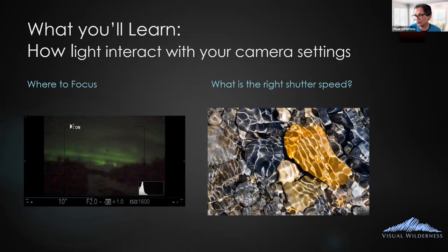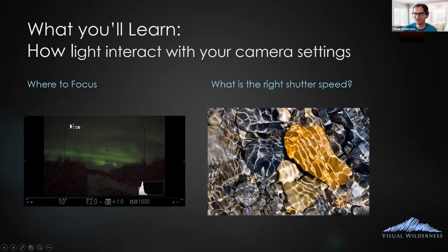That required a really fast shutter speed. Why? If you use a slow shutter speed, those waves move around and blur out the edges that create this superb abstract photo. So you can control your camera settings to capture the light you're trying to work with.